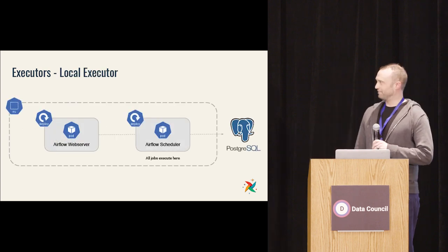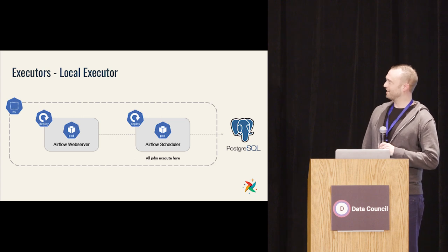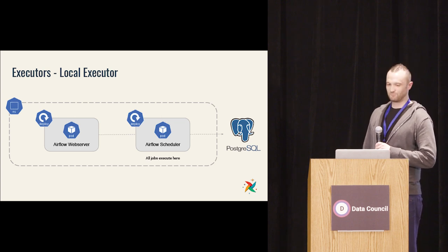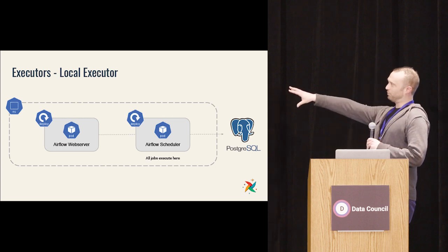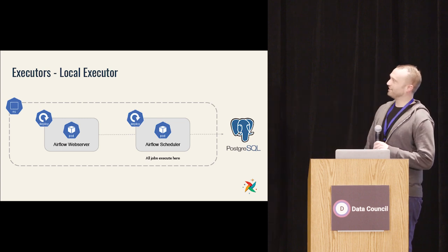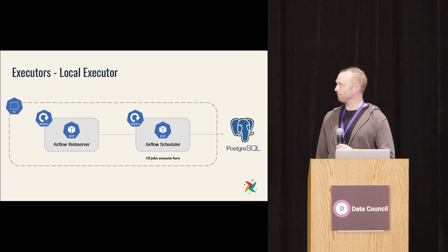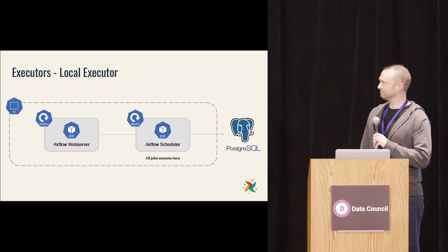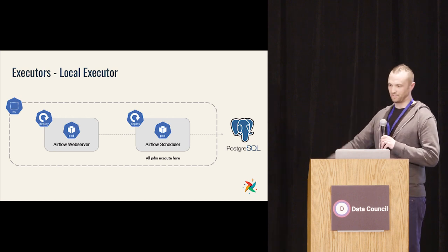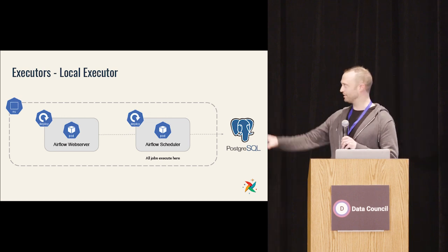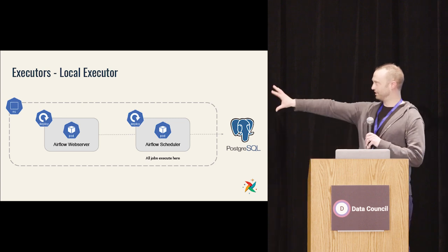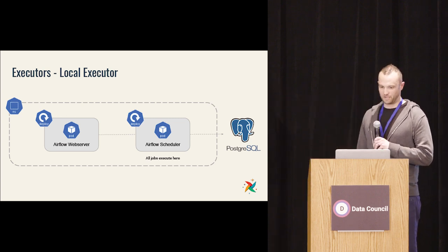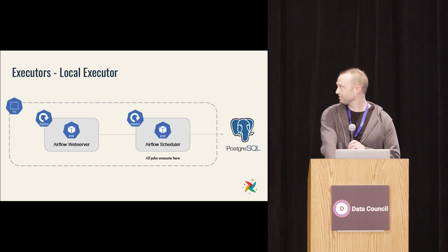If you're running the local executor on Kubernetes, it's pretty simple: you have a Kubernetes Deployment managing a pod for the Airflow web server and a pod for the Airflow scheduler. We typically use an externally managed Postgres. Those two things live in a namespace, happily running, with all tasks executing on that scheduler.